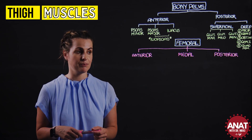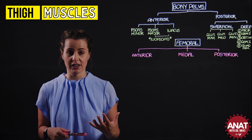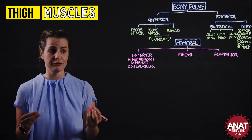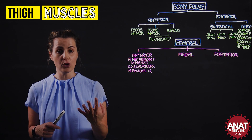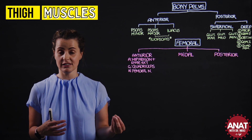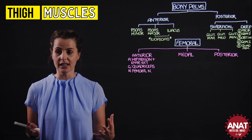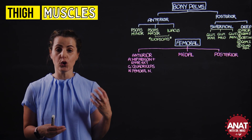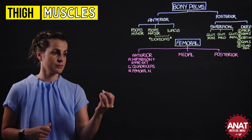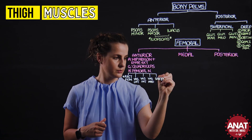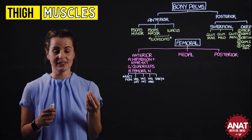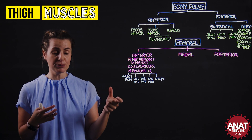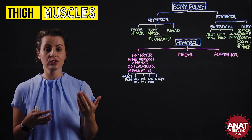The anterior compartment of the thigh houses the quadriceps muscles, all innervated by the femoral nerve. The four muscles making up the quadriceps are rectus femoris, vastus lateralis, vastus medialis, and deep to rectus femoris, vastus intermedialis. Sartorius is also classified in the anterior compartment. Rectus femoris and sartorius are considered to act upon two joints — they flex the hip and also extend the knee.